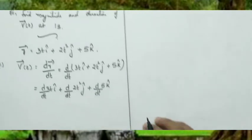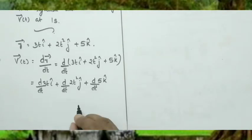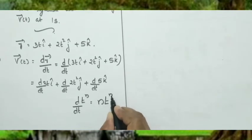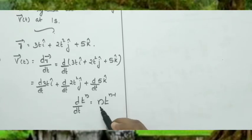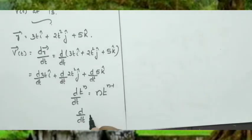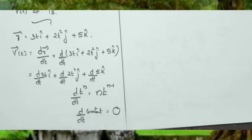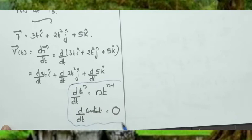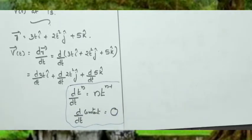We use two differentiation formulas: first, d/dt of t^n equals n·t^(n−1); second, d/dt of a constant equals 0. Using these formulas we can differentiate each component of the position vector.